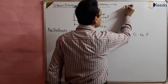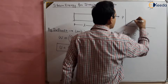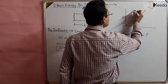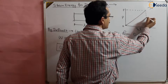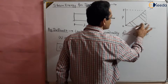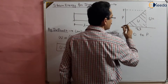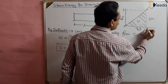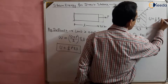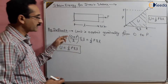We can also show this graphically. The strain energy stored is given by the load-deflection curve, which is a straight line. With initial load zero and final load P, the area under the curve gives the strain energy stored. This area is the triangle OAB, which equals half times base times height, confirming U = half P delta L.